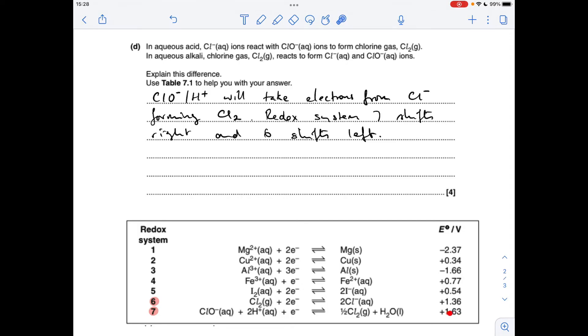And so therefore its electrode potential value is going to become less positive. If it goes below 1.36, that means that this one would run in the forwards direction and this one then would have to move in reverse. You can see if this moves forwards you're going to form CLO minus ions, and if this one's going backwards you're forming CLO minus ions.